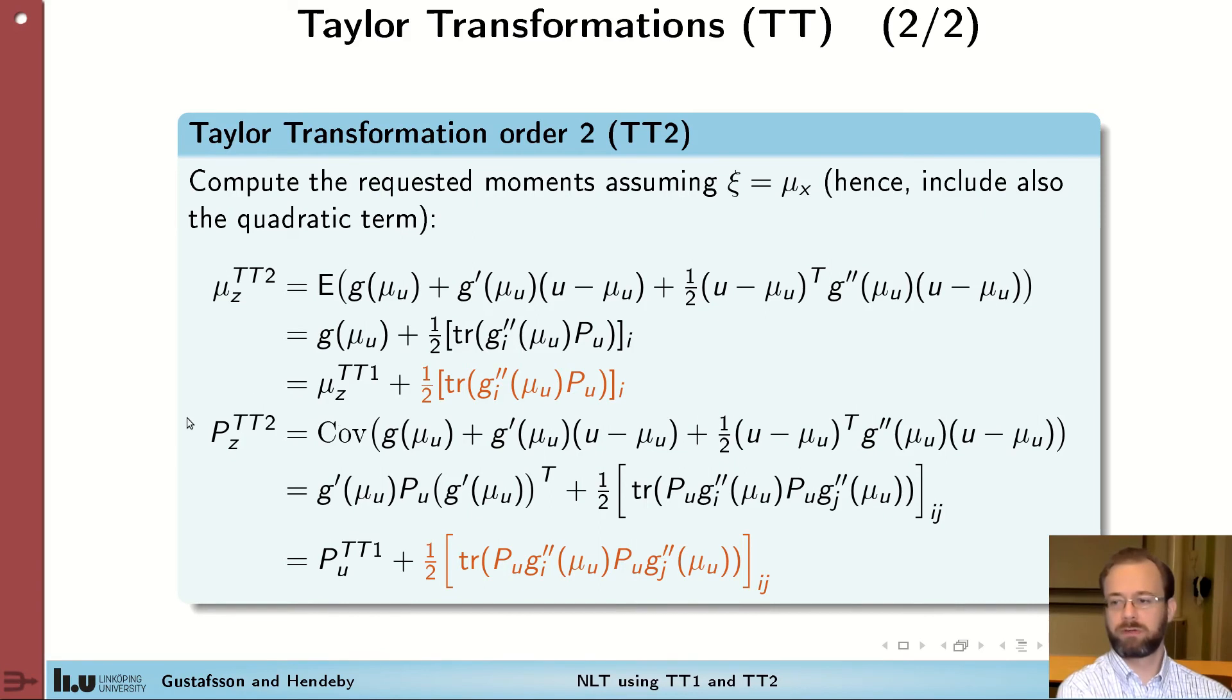Likewise, for the covariance, once we have done the computations, we end up with the expression that includes the covariance term from the TT1 expression, plus an additional positive term. These two expressions make up the TT2 approximation.